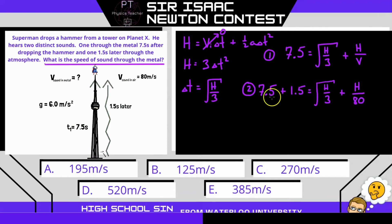divided by a speed, which we know is 80 meters per second. Now, if we rearrange this, 7.5 plus 1.5 is 9. So I'm going to bring that to the other side of the equation. And what we have is the square root of h, and I'm going to write it like this over the square root of 3. That's just this term here. Plus h over 80 minus 9 equals 0. Can you see that this is a quadratic equation?